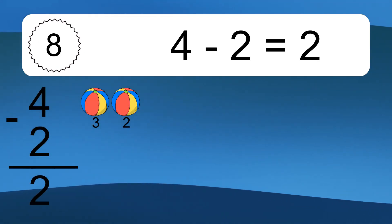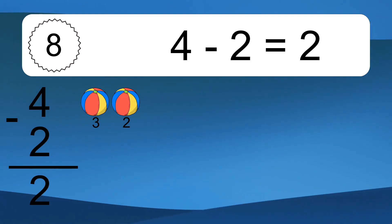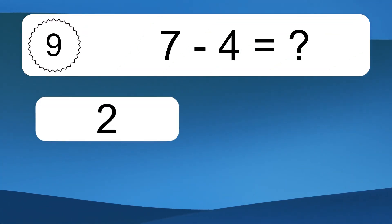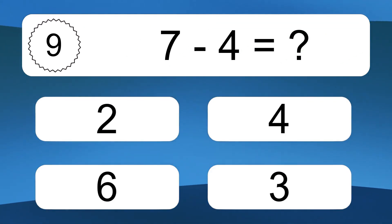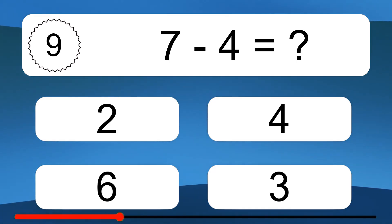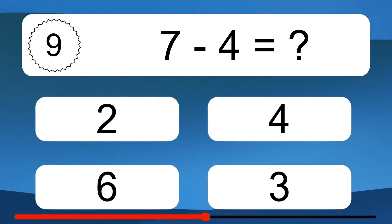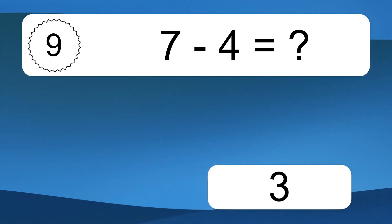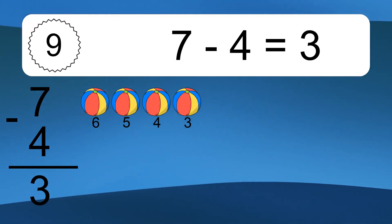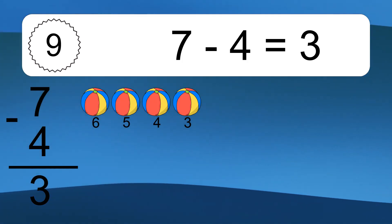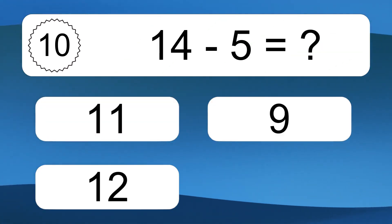4 minus 2 equals what? 4 minus 2 equals 2. Let's count it: 3, 2. 7 minus 4 equals what? Let's count it: 6, 5, 4, 3. 7 minus 4 equals 3. Let's count it: 6, 5, 4, 3.